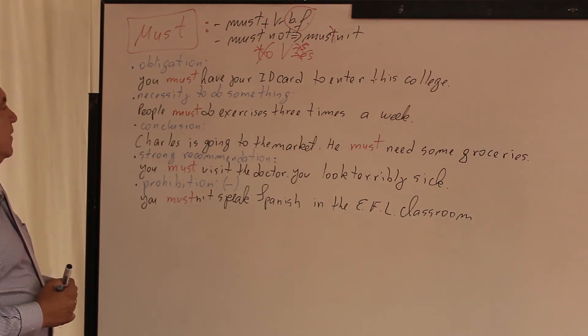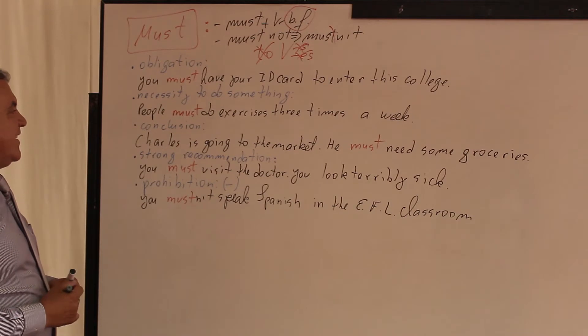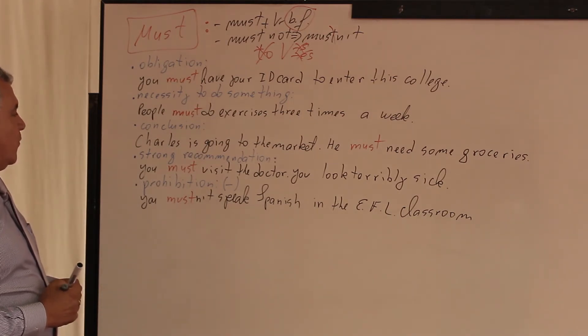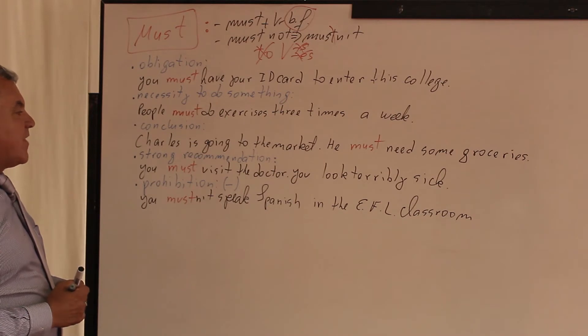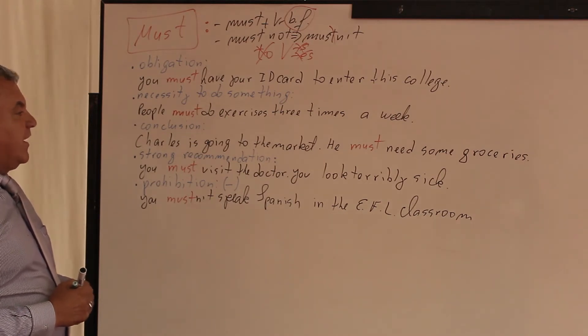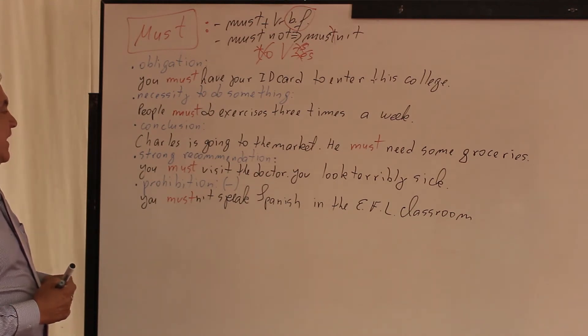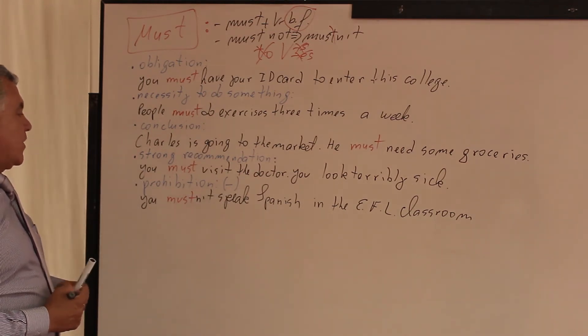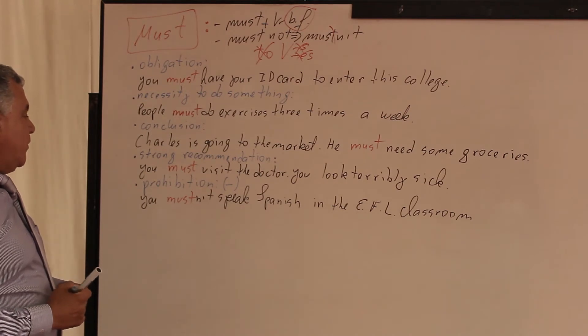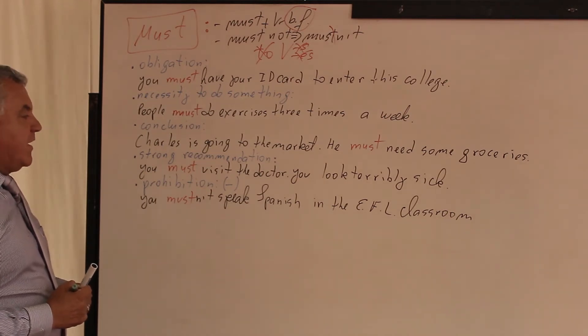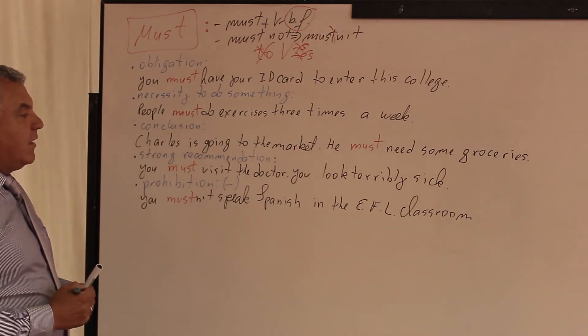The next one is conclusion. For example, Charles is going to the market. He must need some groceries. The next one is a strong recommendation. For example, you must visit a doctor, you look terribly sick. And finally, must in negative indicates prohibition. For example, you mustn't speak Spanish in the EFL classroom.